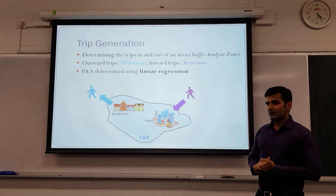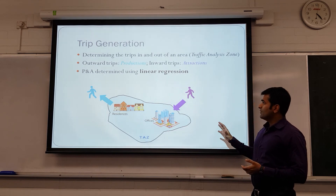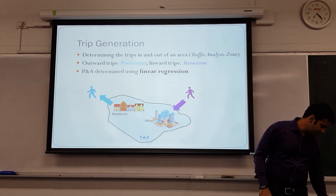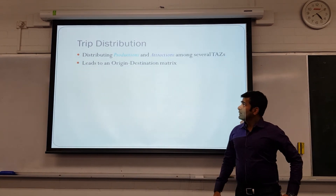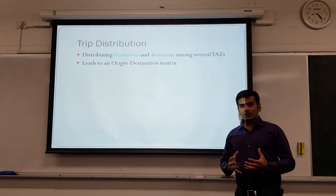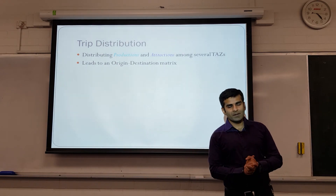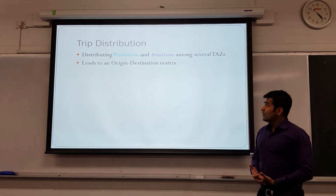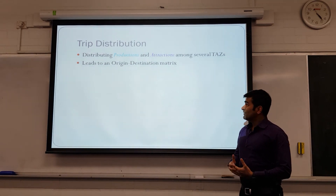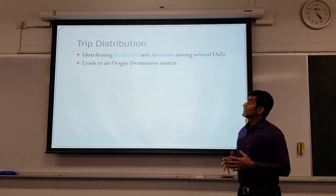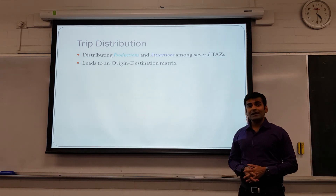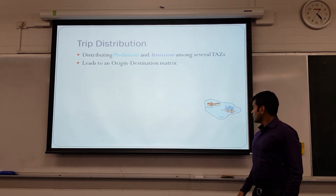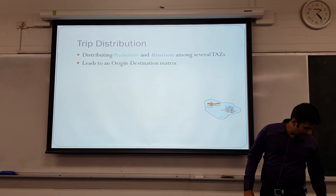This is how we determine productions and attractions. The technique we use to find them is statistical analysis, which mainly involves linear regression. The next step is trip distribution — given that we have found 10,000 people who want to move out of that suburb, where are these people going? Trip distribution focuses on distributing productions and attractions among all the TAZs and leads to the formation of an origin-destination matrix.